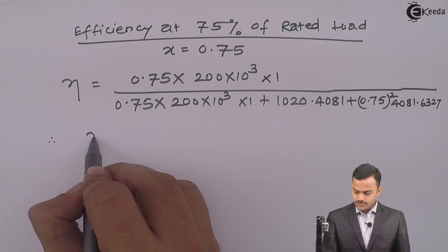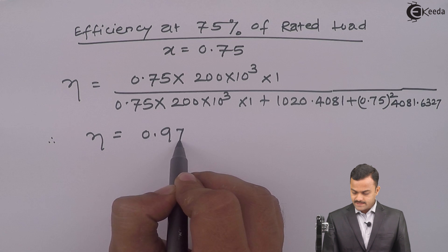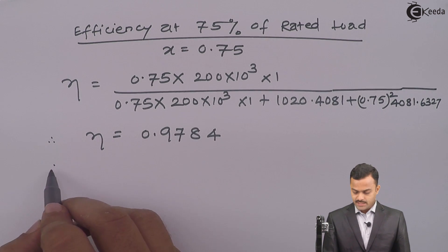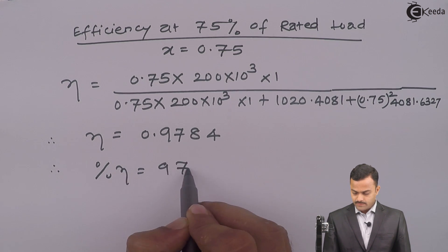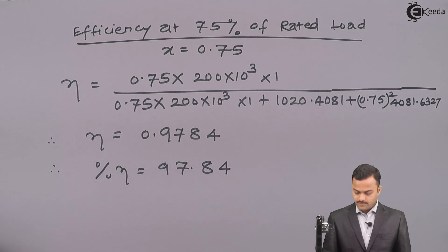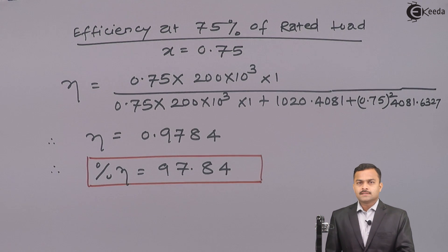So if you solve, you will get efficiency 0.9784. In percentage, it is 97.84%. This is the required answer. Thank you.